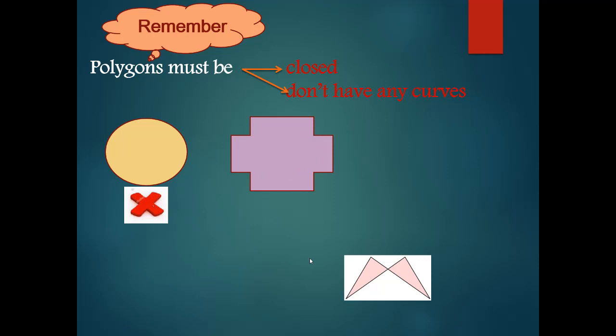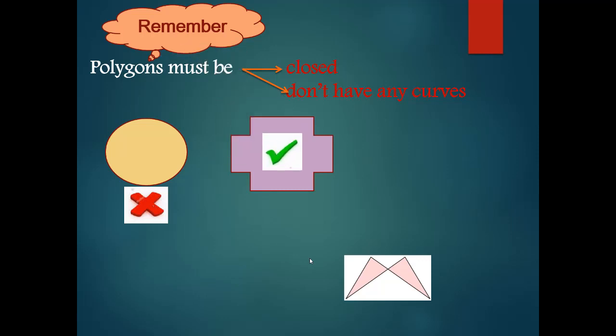Yes, teacher. Why? It's closed, it has more than three line segments, and it doesn't have a curve. Okay, my students. So this is a polygon. Why? Closed shape formed from three line segments or more, and doesn't have any curve. So it's a polygon.